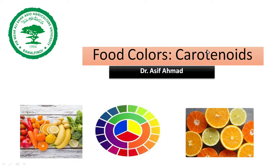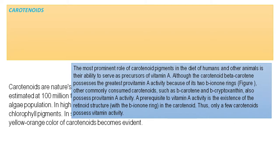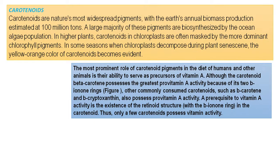Today we will be discussing food colors, and among food colors we will be looking at the chemistry of the carotenoids. Carotenoids are widely distributed substances and color pigments, and it is estimated that Earth's annual biomass production of carotenoids reaches about 100 million tons.